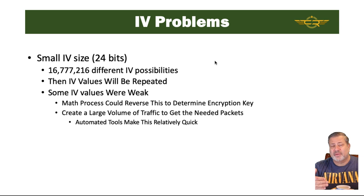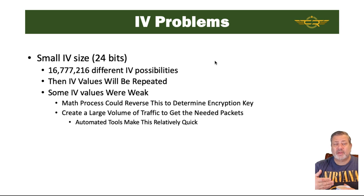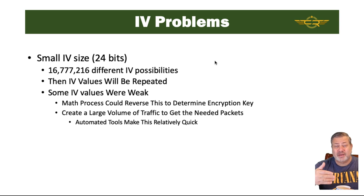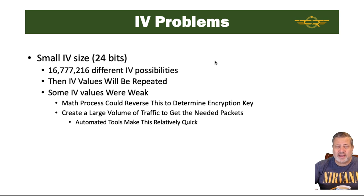Automated tools make this relatively quick. Using disassociation attacks and replay attacks to drive traffic up across the network, an attacker tries to send a large volume of data. Each packet has a different IV, and around 15,000 to 20,000 packets with different IVs is the range needed to start getting repeated IV values. If weak IVs repeat, breaking the WEP key becomes easier. This is done almost exclusively with automated tools.